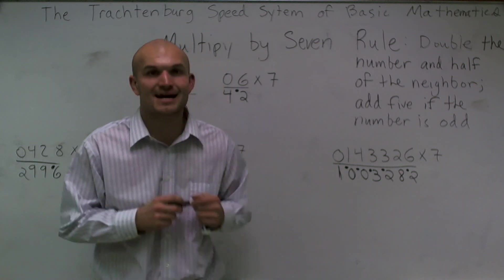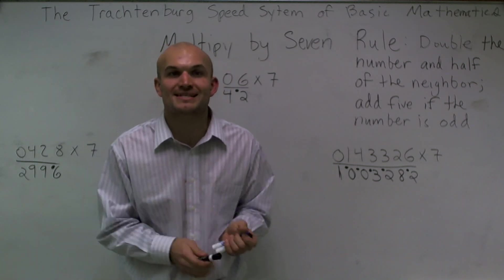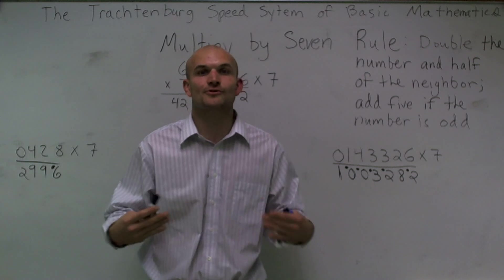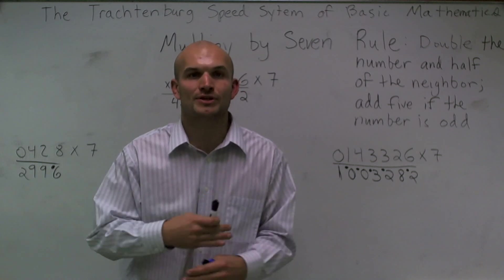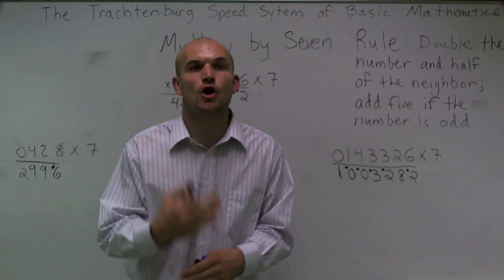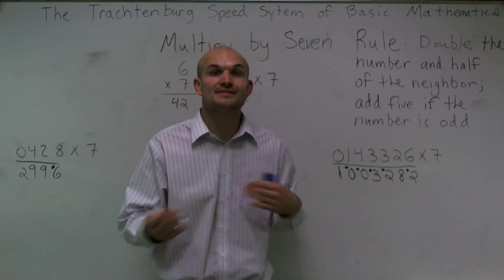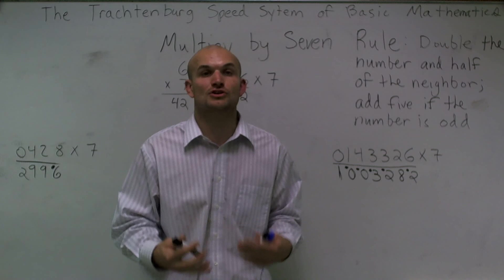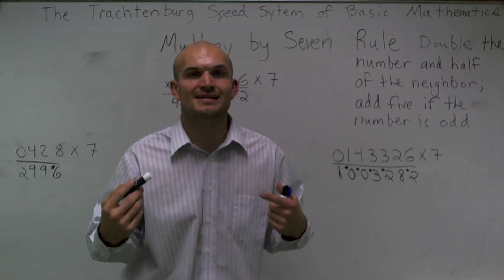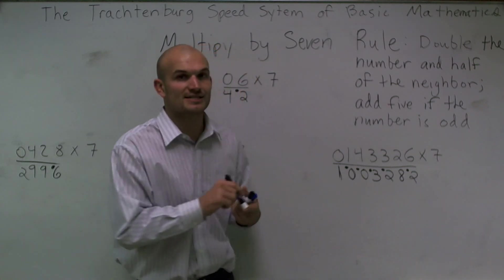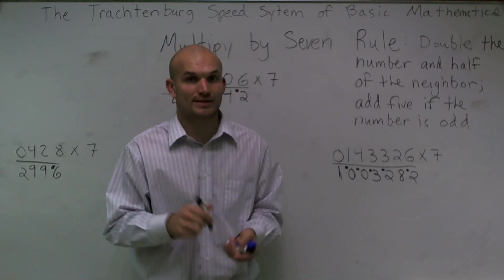So ladies and gentlemen, that's how we multiply by 7 using the Trattenburg system. You're going to get really quick at it when you practice over and over again. In some later videos, I'll show you what to say in your brain so you can get it done really quickly.